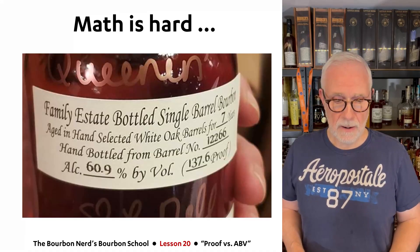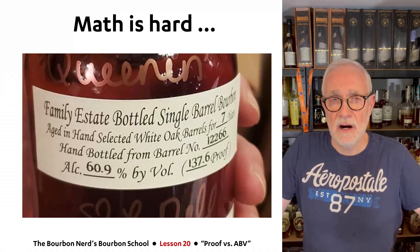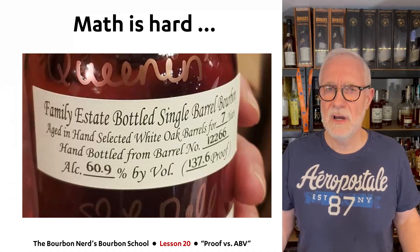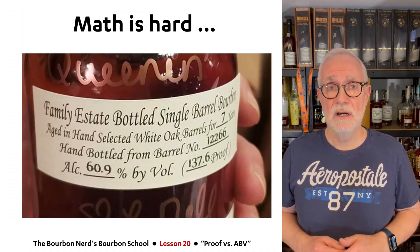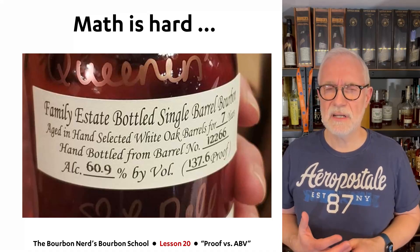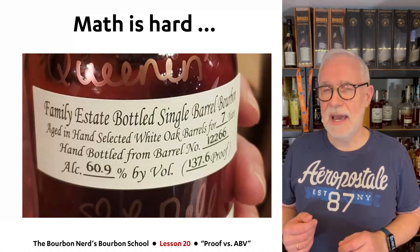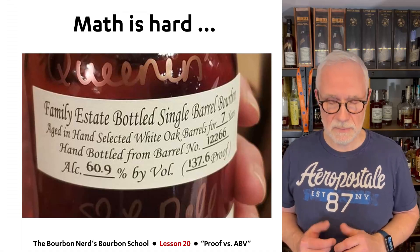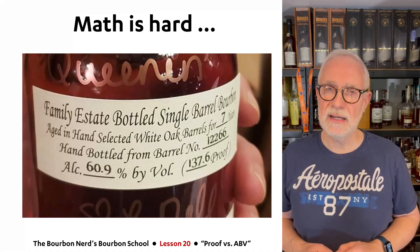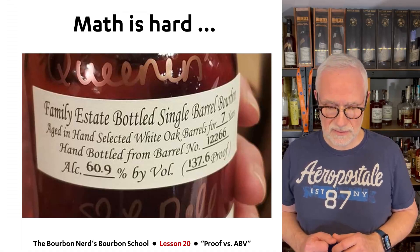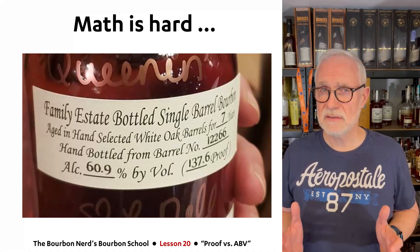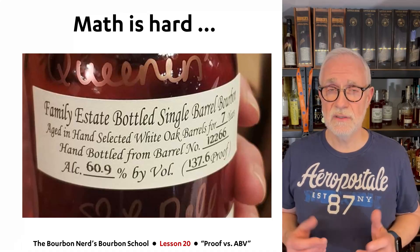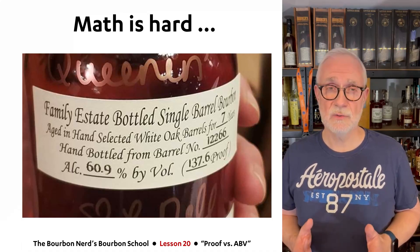Sometimes math is hard though. I came across this label about a month ago from Willett distillery, out of Bardstown in Kentucky. I don't have to go into details, but you can probably see that someone made a mistake, because 60.9 times two doesn't really make 137.6. So even the best people can actually make mistakes sometimes. Unless there is a mistake, you will see the two numbers — one basically affects the other.